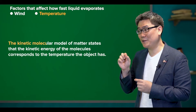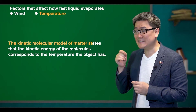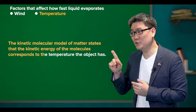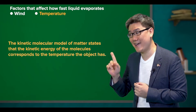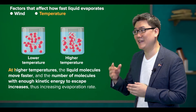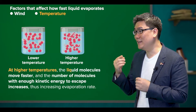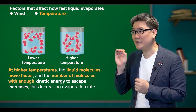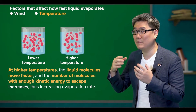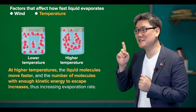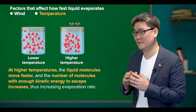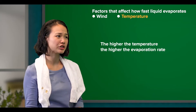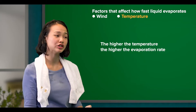The kinetic molecular model of matter states that the kinetic energy of the molecules corresponds to the temperature the object has. Thus, at higher temperatures, the liquid molecules move faster and the number of molecules with enough kinetic energy to escape increases, thus increasing the evaporation rate. That makes perfect sense — so the higher the temperature, the higher the evaporation rate.